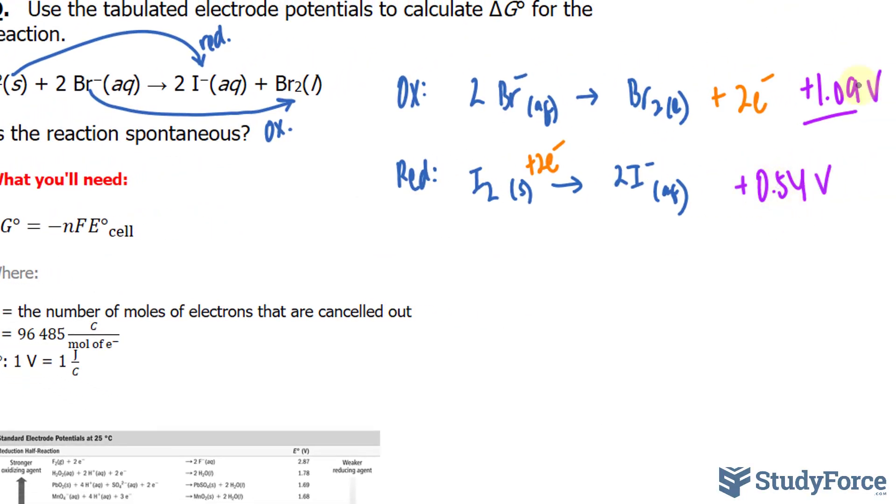From here, we can determine the standard cell potential by using the following formula: the standard cell potential is equal to the standard electrode potential at the cathode minus that at the anode. So I'm going to subtract what's at the cathode, and the cathode is always the reduction. So that is the cathode, and that is the anode.